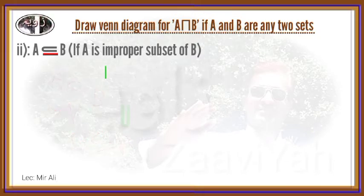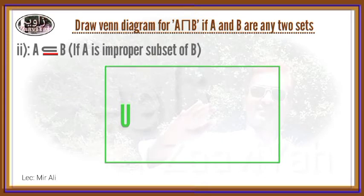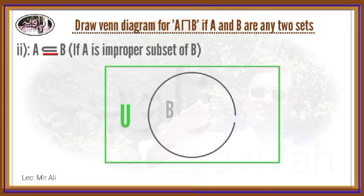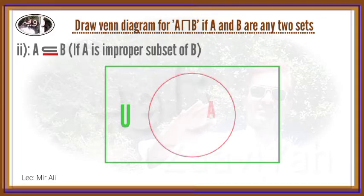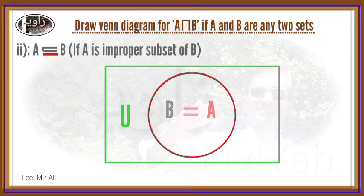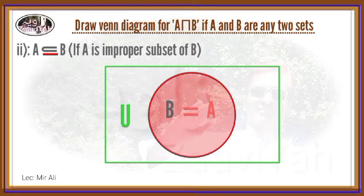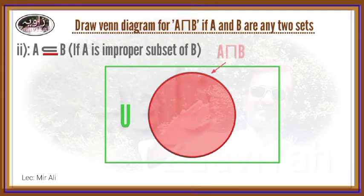That is set U — universal. That is set B, and that is set A. The A and B intersection — the shared region — that is A-Intersection-B.